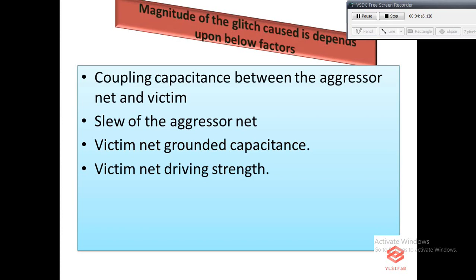If the slew of the aggressor net is high, slew means high transition, so rise time will be more. Lesser the transition in aggressor, less impact it will be on the victim. Higher the victim net ground capacitance, less the crosstalk will be.